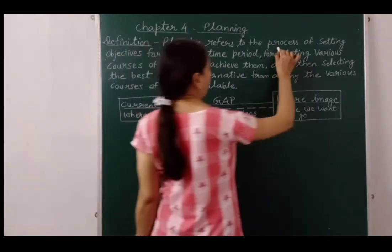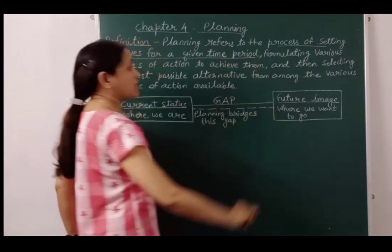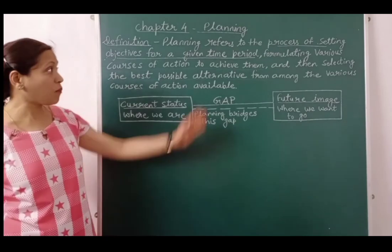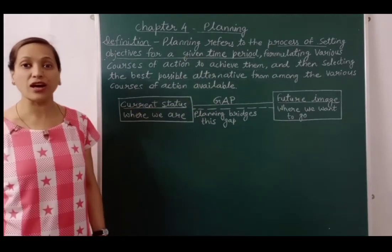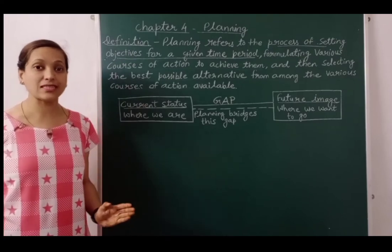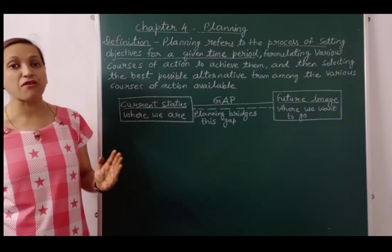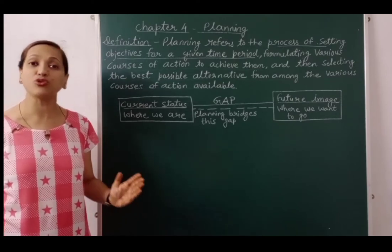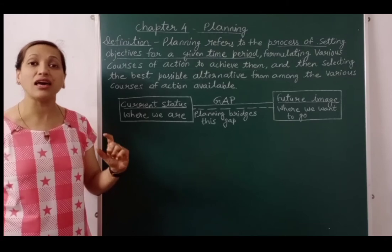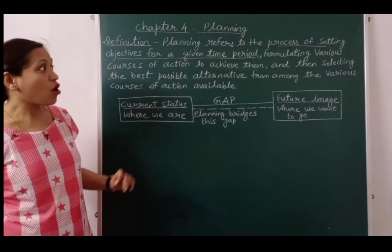Planning refers to the process of setting objectives for a given time period. Plans bahut specific hone chahiye — ek particular time period ke liye — jismein objective measurable ho. For example, a manager wants to increase profit by 5% in July 2020. This is a very specific plan because it is for one month and its objective is also measurable.